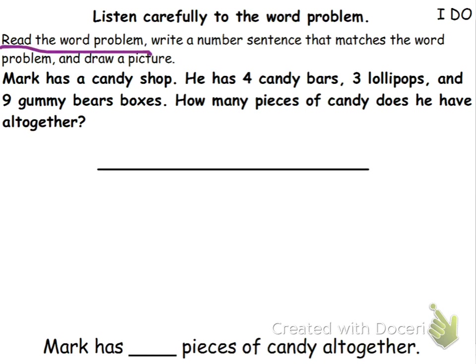The first thing we do when we have a word problem is read it. It says: Mark has a candy shop. He has four candy bars, three lollipops, and nine gummy bear boxes. How many pieces of candy does he have altogether? I'm going to read it again because we want to read it as many times as we need to fully understand it.